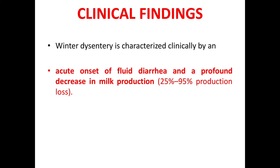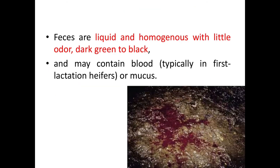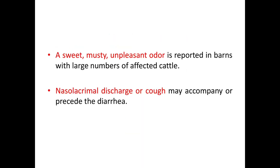Winter dysentery is characterized clinically by an acute onset of fluid diarrhea and a profound decrease in milk production — sometimes 25-95% production loss. Feces are liquid and homogenous, dark green to black, and may contain blood — typically in first-lactation heifers — or mucus. A musty, sweet, unpleasant odor is reported in barns with large numbers of affected cattle. A nasal or lacrimal discharge or cough may accompany or precede the diarrhea.